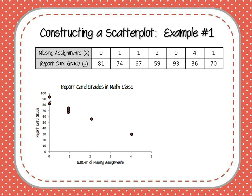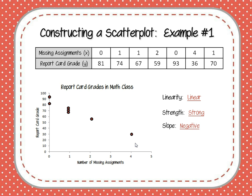If you imagine a broad highlighter drawing over all of these dots, you could probably catch them all on a line. All the dots seem to be kind of following a linear pattern, showing a linear relationship. In terms of strength, this correlation is strong — there's a strong correlation between missing assignments and report card grades — because these dots are clustered pretty closely together. As far as slope, we would say that the slope is negative, because as my x values are getting larger, my y values are getting smaller. As the number of missing assignments increases, the grade decreases. So that's an example of a negative correlation.